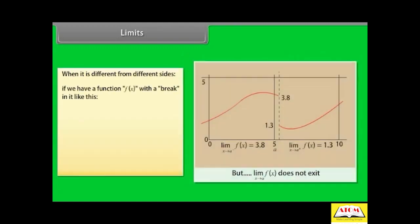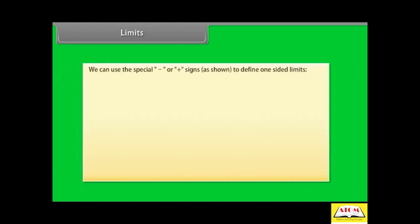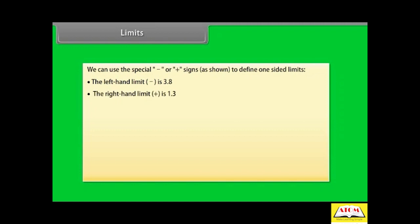But what if it is different from different sides? What if we have a function f(x) with a break in it? This is a function where the limit does not exist at a. You cannot say what it is because there are two competing answers: 3.8 from the left and 1.3 from the right. But you can use the special minus or plus signs to define one-sided limits. The left-hand limit is 3.8; the right-hand limit is 1.3; and the ordinary limit does not exist.